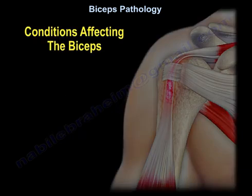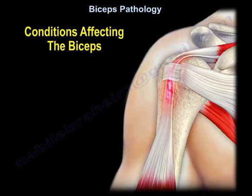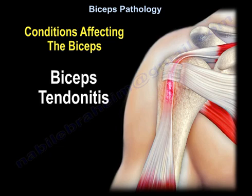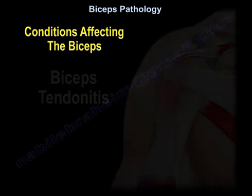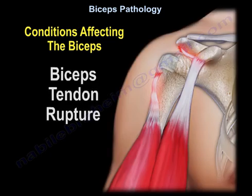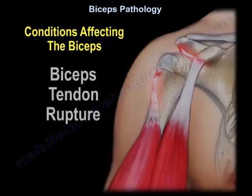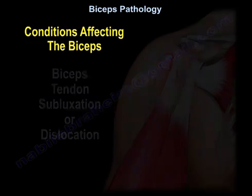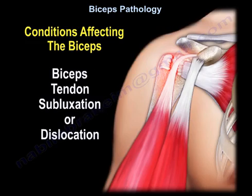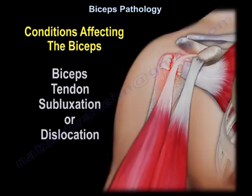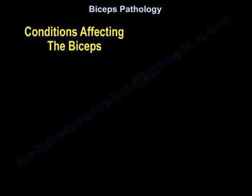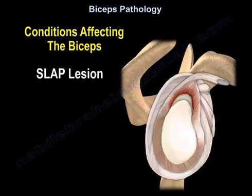What are the conditions affecting the biceps? Biceps tendonitis, biceps tendon rupture, biceps tendon subluxation or dislocation, and SLAP lesions.